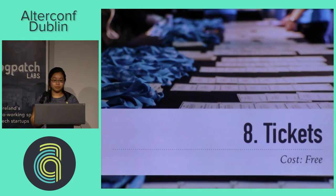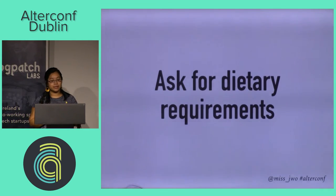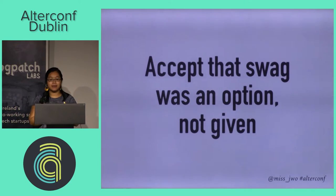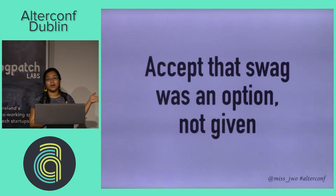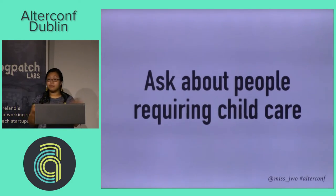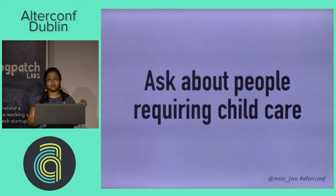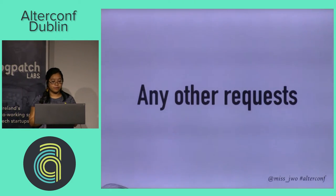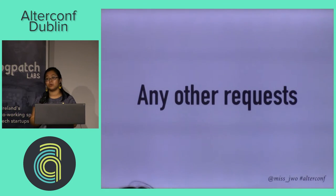Tickets: the cost of changing the way you ask for tickets is free. Ask for dietary requirements at ticket purchase. If you're at a WordCamp where people expect swag, make them acknowledge there might not be any. Ask if anyone needs sign language, ask if people need childcare — any kind of accessibility questions, just ask them there. Also have a box that says 'any other requests' — you'll be surprised by what comes in, so take every single request seriously.